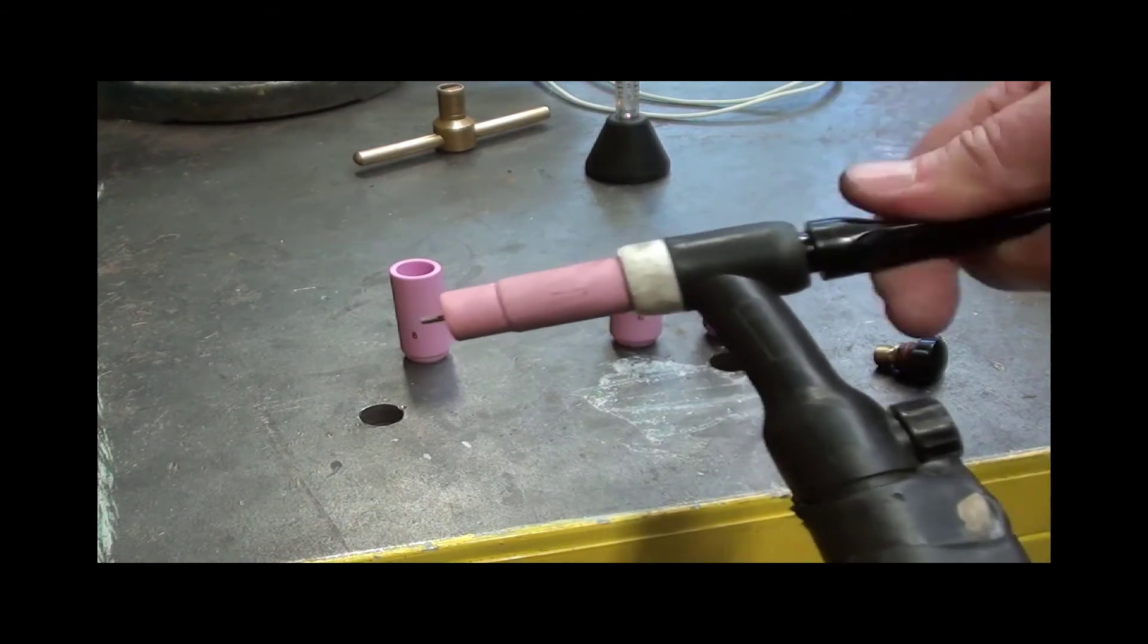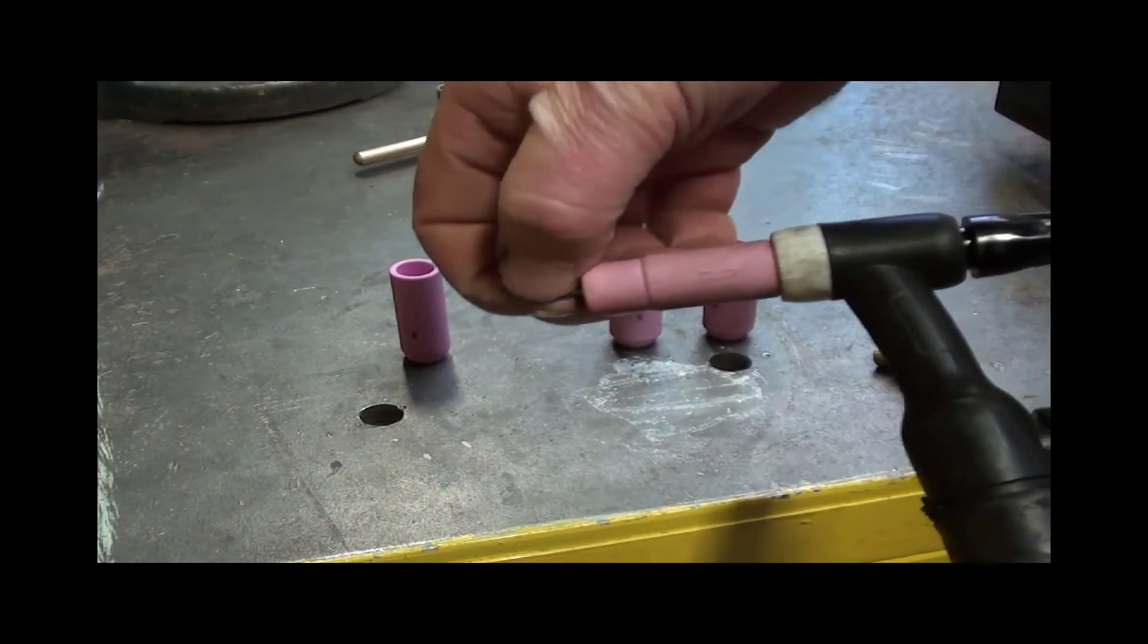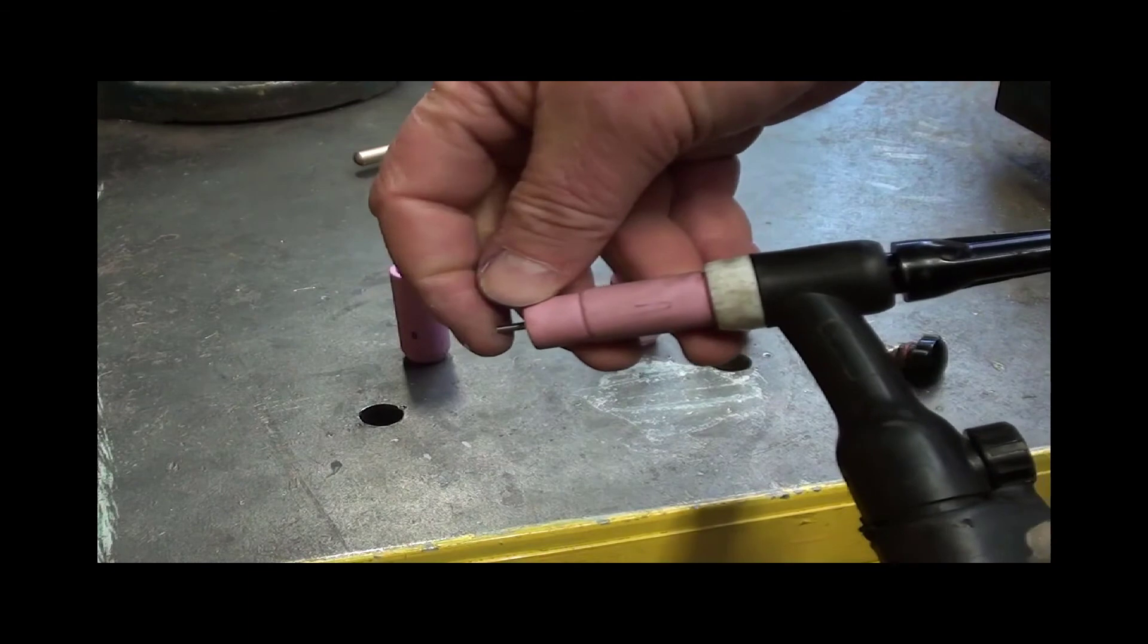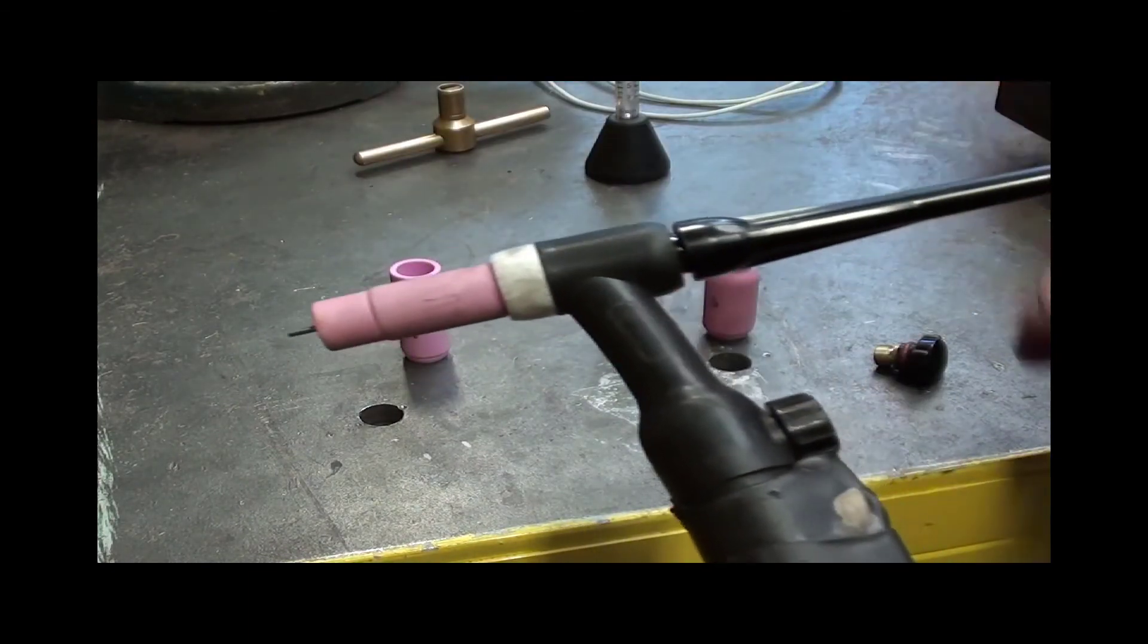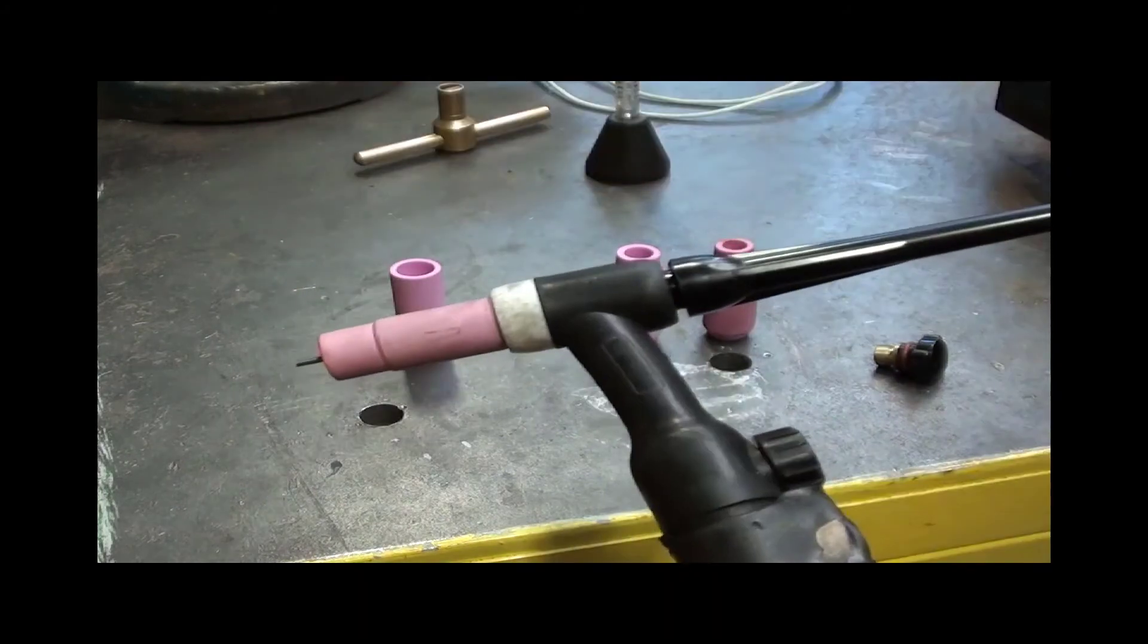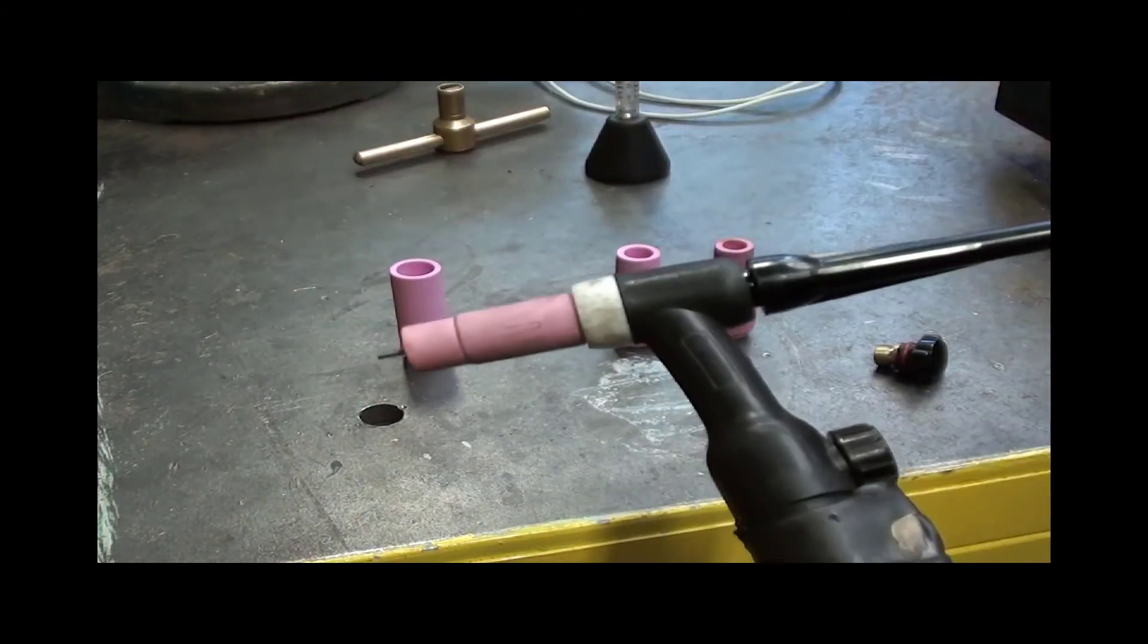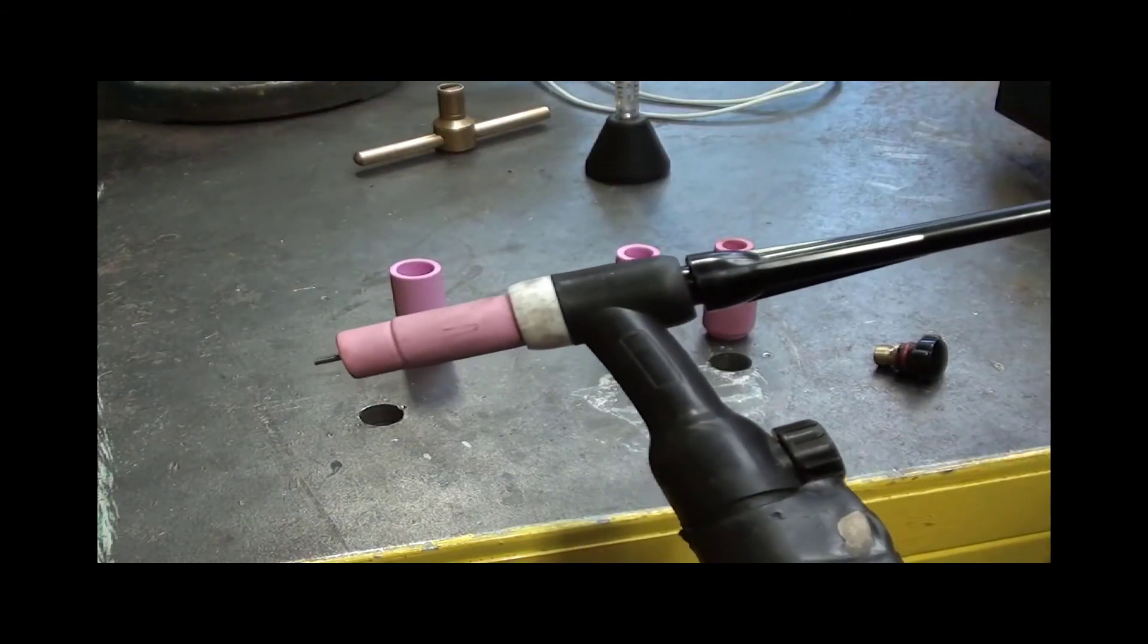So what the back cap does is, before you do it up tight, you can slide your electrode backwards and forwards. But when you do it up and pinch it off with the back cap, it actually locks the tungsten in. You can't actually pull it backwards and forwards. And the O-ring seals the gas on the back of it.